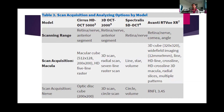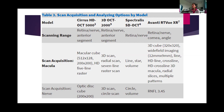This table compares SD-OCT normative databases by manufacturer. There are approximately 182 to 284 subjects per normative database. Ages range from 18 to about 84 years. For Carl Zeiss: 133 males and 149 females. Topcon disc and macula: 54 males, 92 females; macula: 112 females, 61 males. Heidelberg: 111 males, 90 females.